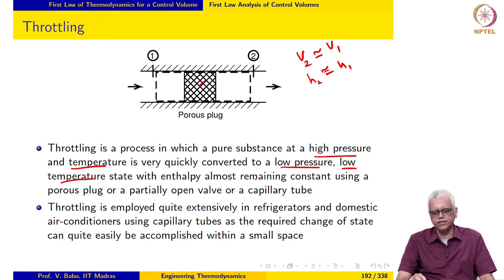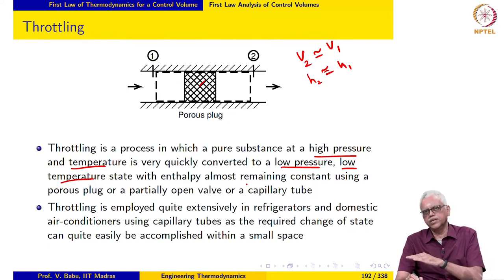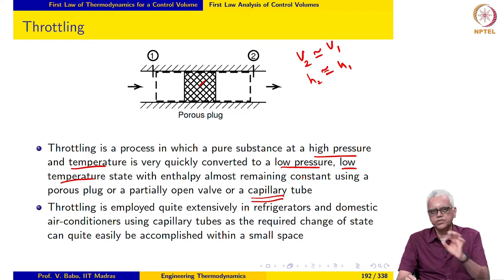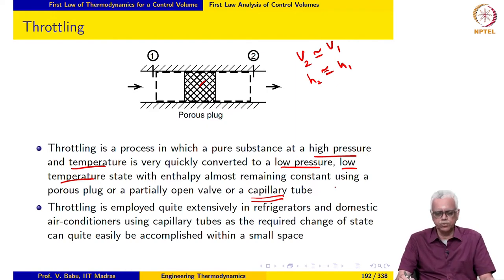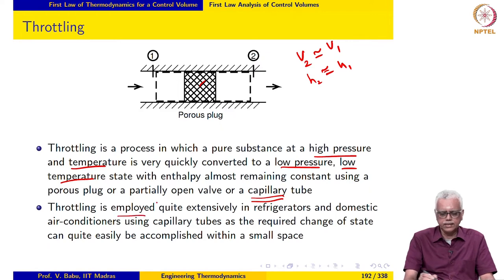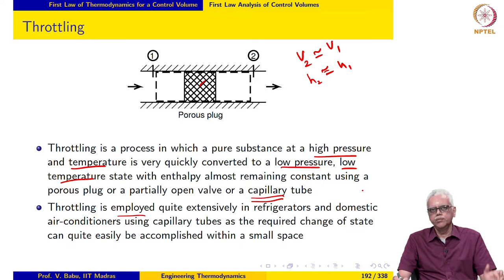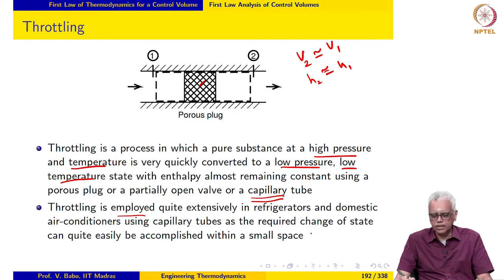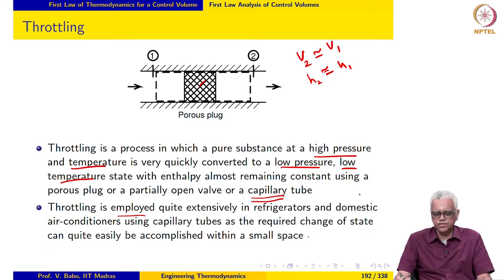Throttling is normally accomplished by making the fluid go through a very tortuous passage, such as a porous plug, or alternatively a valve that is partially open — causing a steep reduction in pressure and temperature. In practical applications, a capillary tube — a long tube of required length but very small diameter — may also be used. Throttling is quite extensively employed in refrigerators and domestic air conditioners. Capillary tubes are especially good: porous plugs may get clogged over time, but capillary tubes are easier to replace and service, so they are quite extensively used in domestic refrigerators and air conditioners.